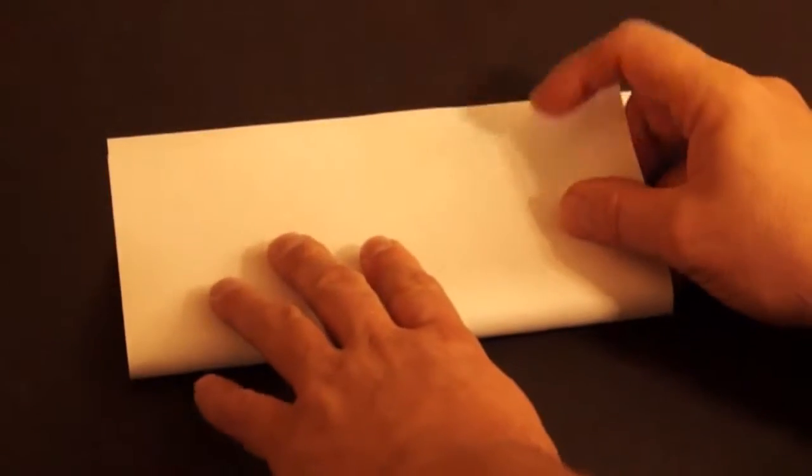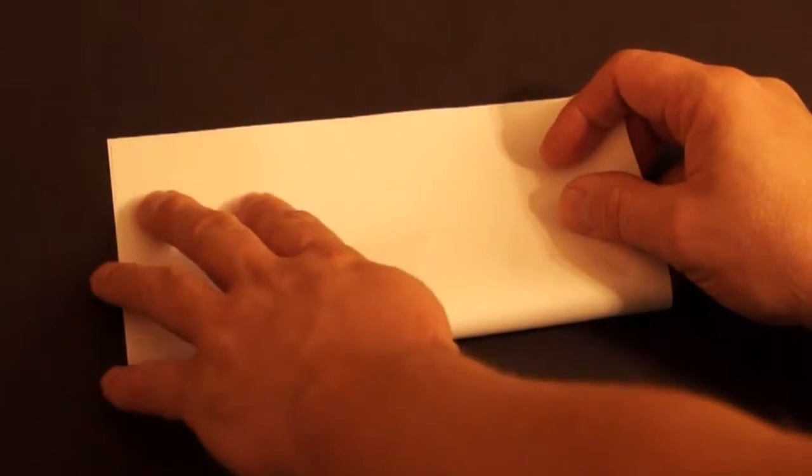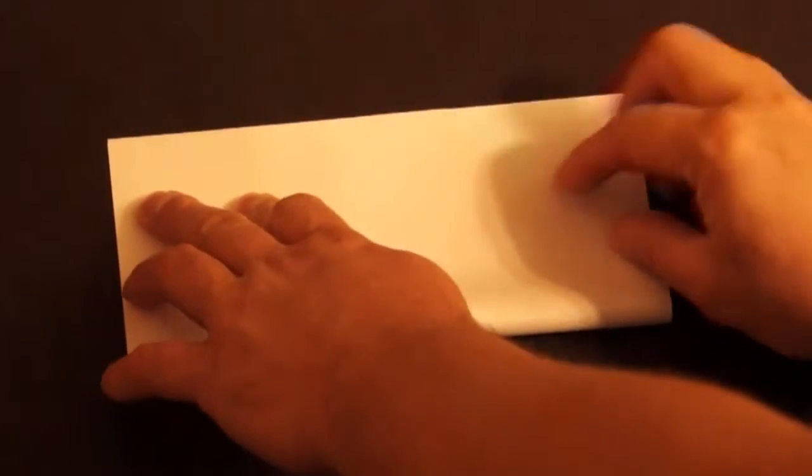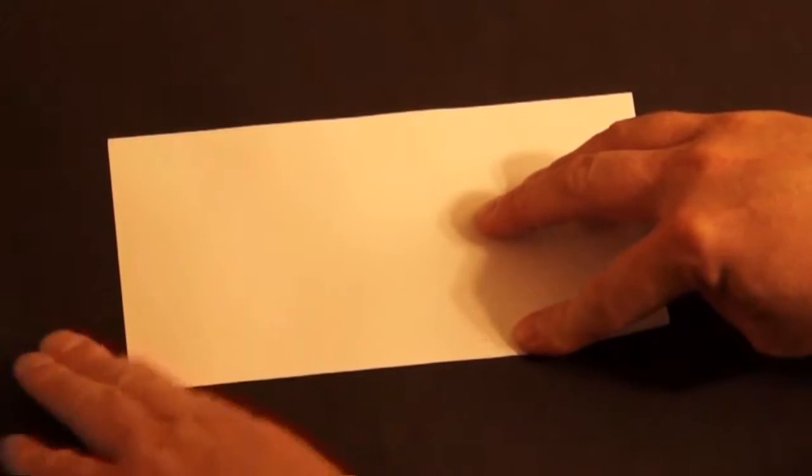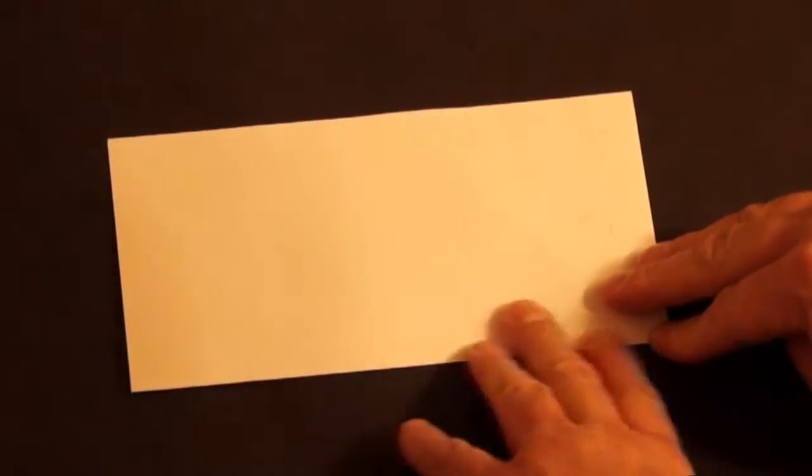First we start with the square. Fold the bottom to the top. Line up the edges as best you can. Press down good on your fold.